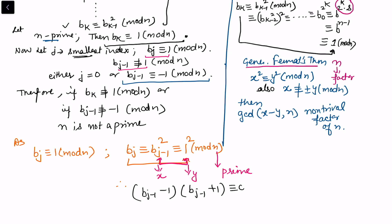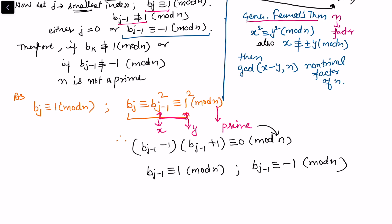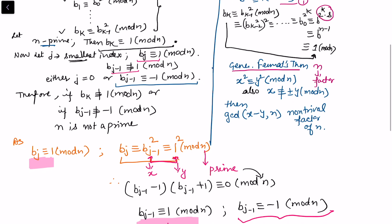If n is prime, there are only two possibilities: either bⱼ₋₁ ≡ 1 mod n, or bⱼ₋₁ ≡ -1 mod n. The first possibility cannot hold, because j is the smallest index where the sequence reaches 1, so we cannot find a smaller index satisfying this. Therefore the only remaining possibility is bⱼ₋₁ ≡ -1 mod n, which is why this condition must hold when n is prime.